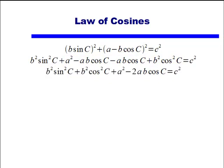What I've done on this step is reorganize the terms on the left hand side. I've taken everything with b squared as a factor on the left hand side, let's see I have b squared sine squared c plus b squared cosine squared c, then I still have my a squared term, and then I've combined my two terms together to give me minus 2 a b cosine c, and again this all equals c squared.